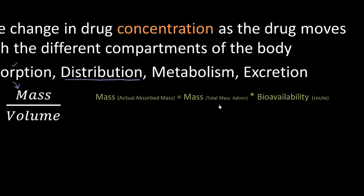The equation was: the actual absorbed mass equals the total mass administered times the bioavailability of the route. This gives us the fraction of drug getting into the systemic circulation. If I gave this drug IV, the bioavailability by definition is 1 or 100%. That means the total mass you administer IV is the total mass that gets into the systemic circulation, because when you give it IV, you're directly injecting it into the systemic circulation.